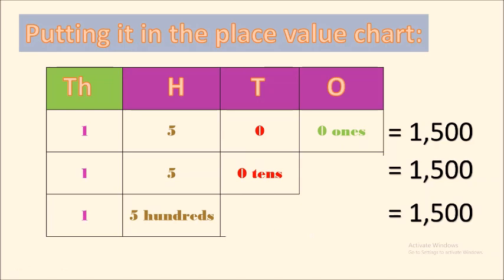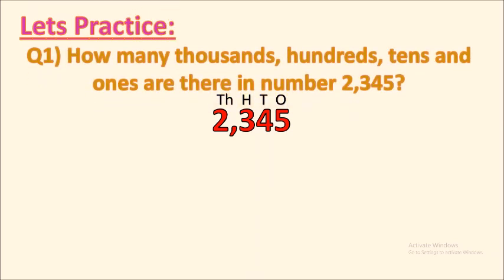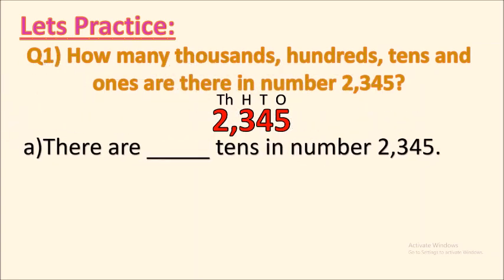Now let's practice. How many thousands, hundreds, tens, and ones are there in number 2345? Let's check: there are how many tens in number 2345? You can see the number 2345 with place values — 2 at thousands, 3 at hundreds, 4 at tens, 5 at ones. To find tens, we take digits till the tens place: 2, 3, and 4. Leaving out the ones place, the answer is 234 tens.